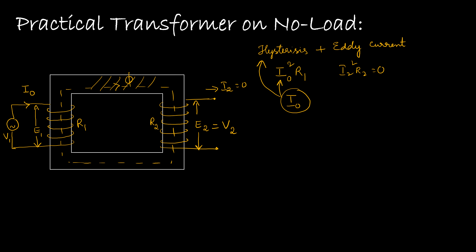Now let us discuss this no load current. The no load current has two components: one is called the magnetizing component of current and the other is called the working component of current. The magnetizing component serves for the magnetization of the core — it produces the magnetic field in the core. The working component serves to supply the losses in the transformer under no load conditions. The resultant of the magnetizing and working components is our no load current I0.